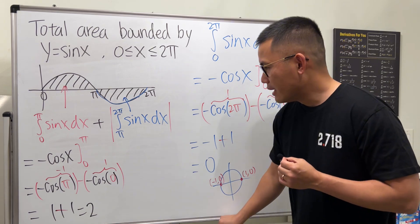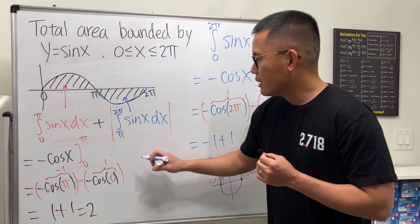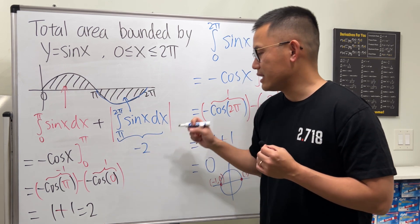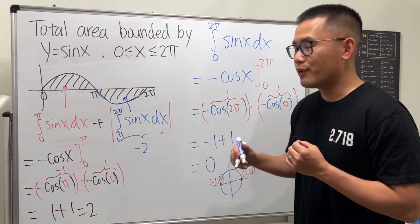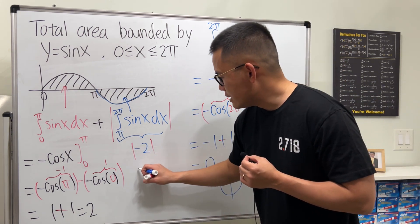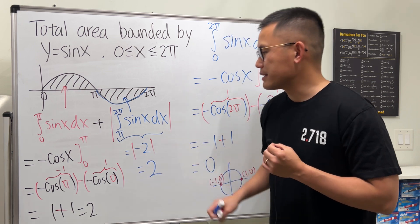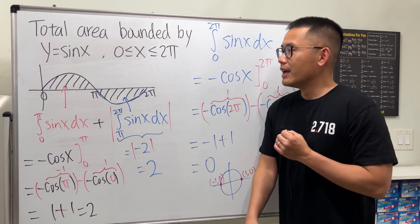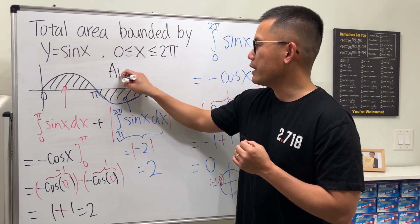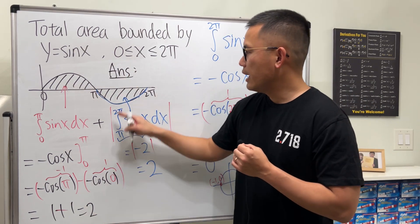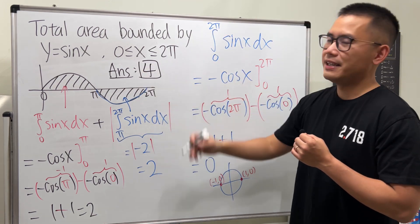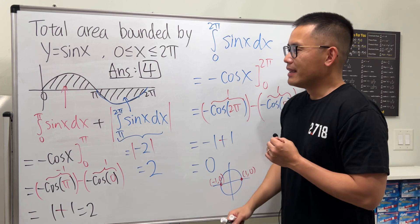For the blue region — the integral from pi to 2π of sin(x) — you will end up with negative two. But we don't want a negative area, so make sure you take the absolute value, which gives you positive two. Coming back to answer the question: total area is two from the first region plus two from the second, giving us four.